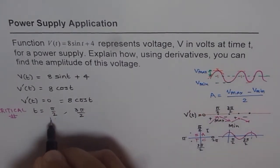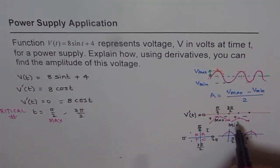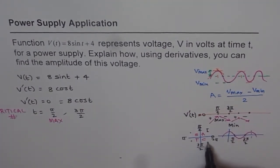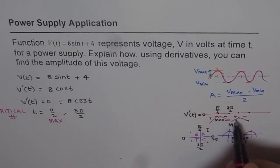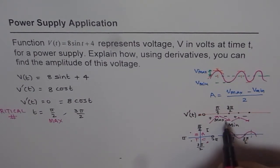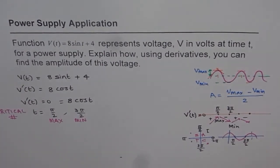After 3π/2, checking a point between 3π/2 and 2π, cos(t) is positive again, so the function is increasing. Since the function changes from decreasing to increasing, we hit a minimum at 3π/2. That is how you analyze and figure out your maximum and minimum points.